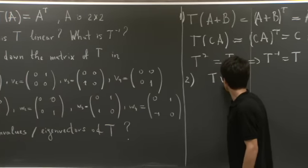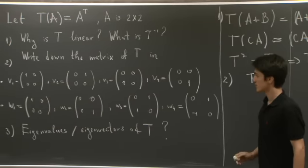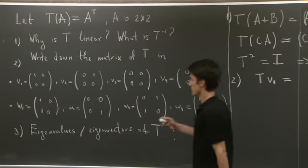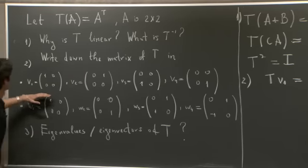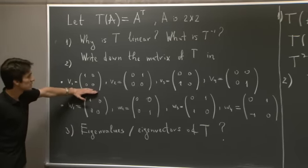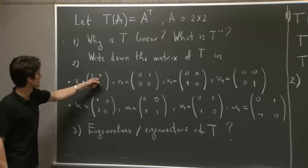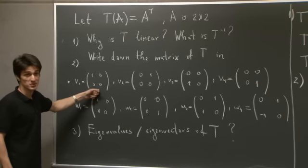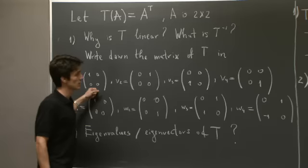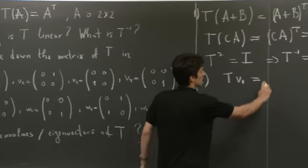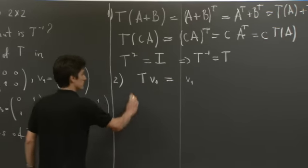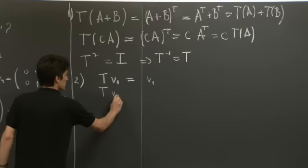So T to the V1. Let's go back. So here. So T takes the transpose of this matrix. But we see that the transpose of 1, 0, 0, 0 is 1, 0, 0, 0. So it's a symmetric matrix. So T of V1 is V1.